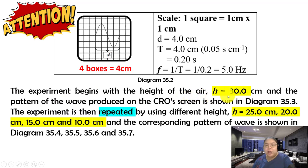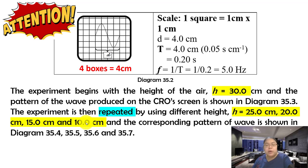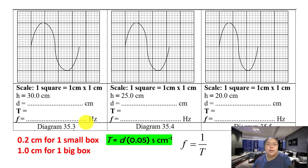The wave pattern is shown in diagram 35.3. The experiment is then repeated using different heights: 25, 20, 15, and 10 cm. Because the height values are fixed and repeated, h is the manipulate variable. The other physical quantity, frequency f, is therefore the responding variable. This is how you identify the manipulate and responding variables from the question.